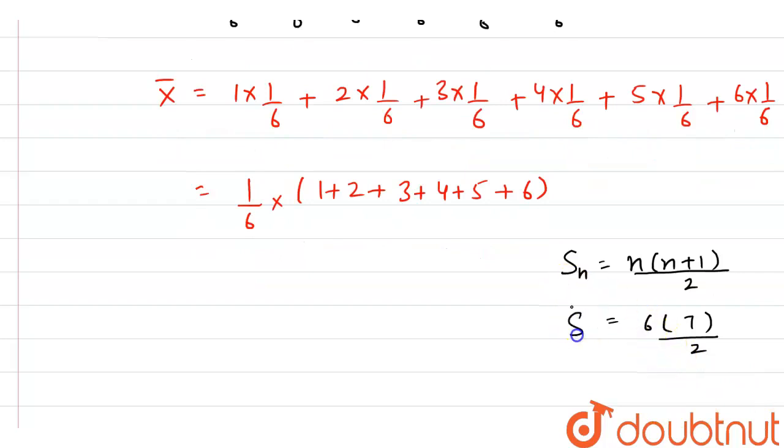So here we can say that the sum of these numbers is 6 into 7 that is 42 by, here we can cancel this 2 with 6, so here it is 7 into 3, that is 21. So it is 21 by 6 and if we solve this then we can say that X bar is equal to 7 by 2 and hence we can say that this is our mean and this is our final answer.